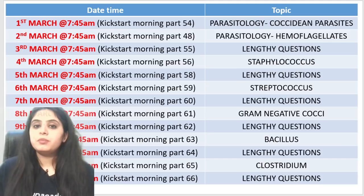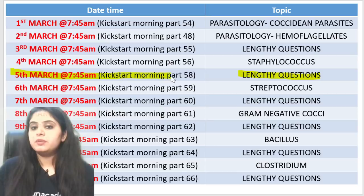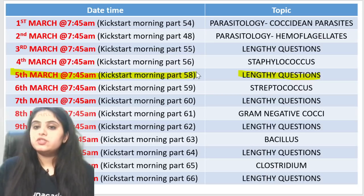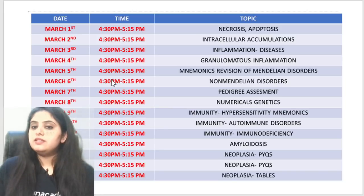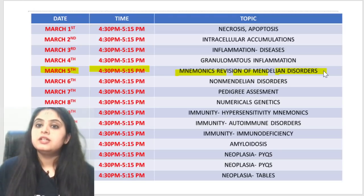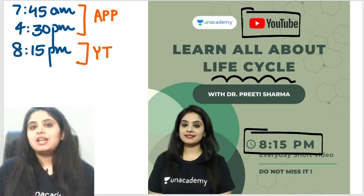Let me give you a brief about the other classes coming up. Tomorrow morning at 7:45am, we are meeting for a kickstart morning session on the Anacademy app — a 45-minute session covering 5 Lendi questions, image of the day, and mnemonic of the day. Then tomorrow evening at 4:30pm, another 45-minute session revising the mnemonics of Mendelian disorders: autosomal dominant, recessive, and so on. At least one inheritance question is a must. And then at 8:15pm again we will have a life cycle.